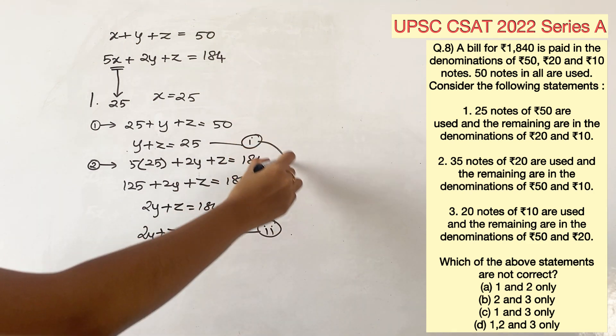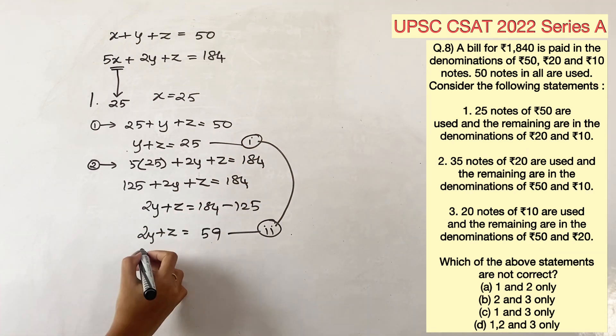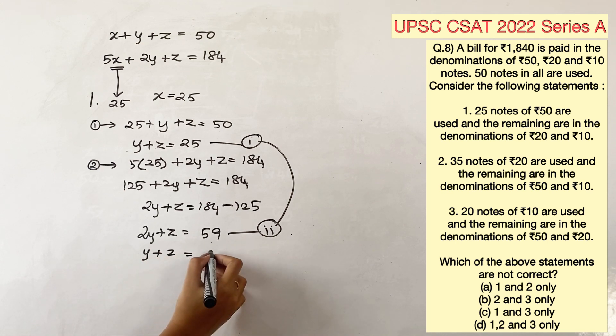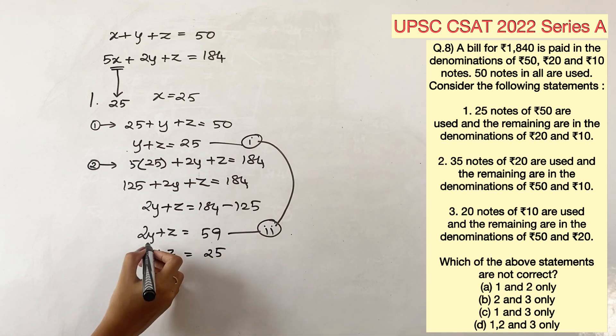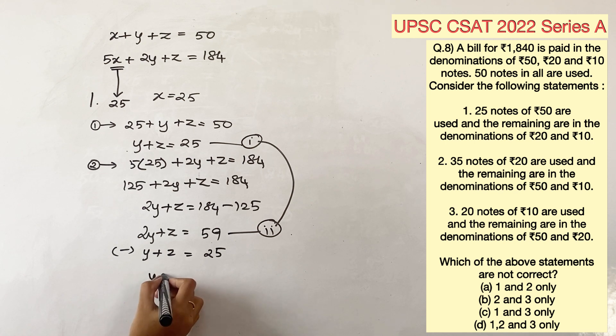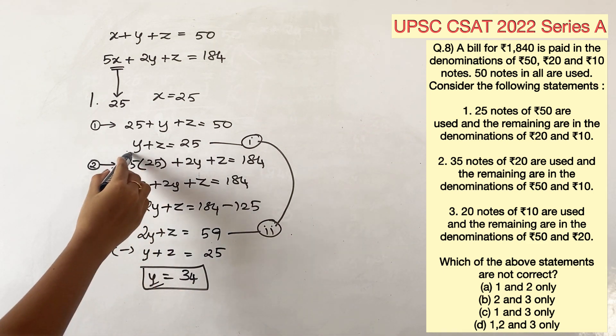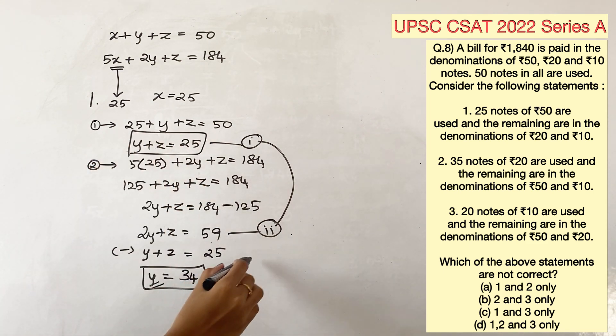Solving equations 1 and 2, subtracting this equation, y is equal to 59 minus 25, which is 34. Now, y cannot be 34, because y plus z is clearly given as 25, where y should be lesser than 25. So, statement 1 is not possible.